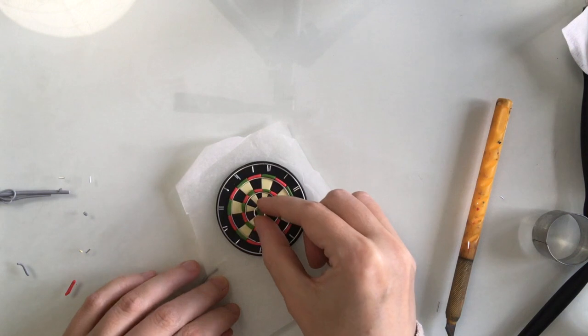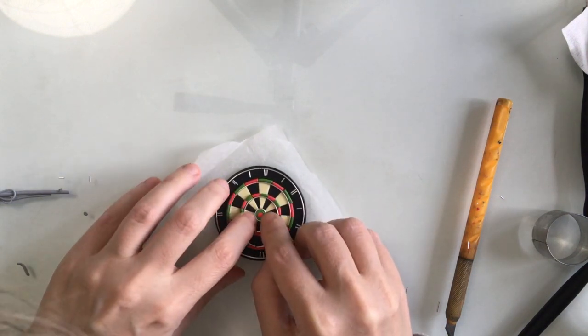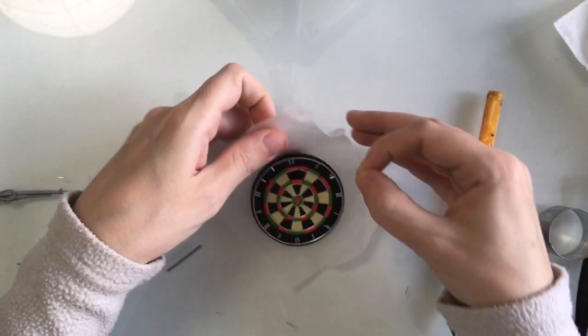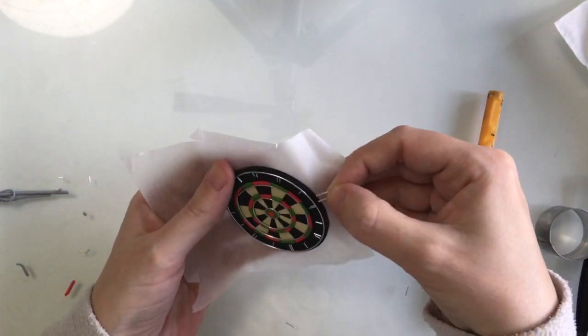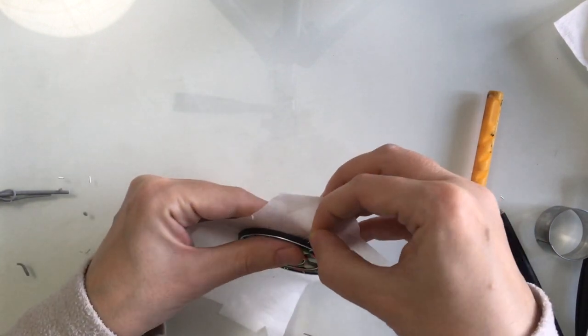Just some wire to go around the bullseye here, and I'll just add in a little attachment here so I can hang the dartboard.